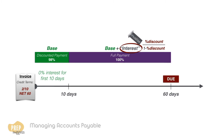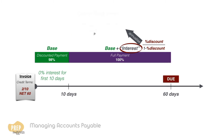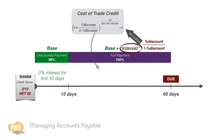If we annualize this interest, it can be viewed as the cost of trade credit to the firm. We see the cost of trade credit as the interest rate that the firm pays for up to 50 days after the discount period.